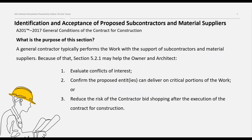So, you may be asking, what is the purpose of this section? In most cases, a general contractor performs the work with the support of subcontractors and principal material suppliers. Because of that, providing a list of persons or entities that will perform the work governed by the contract for construction is important. For example, Section 5.2.1 may help the owner and architect evaluate conflicts of interest with proposed subcontractors and material suppliers. It may also help them confirm the proposed entities can deliver on the critical portions of the work.